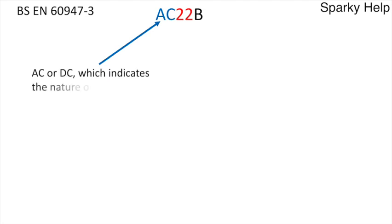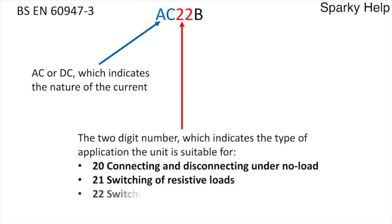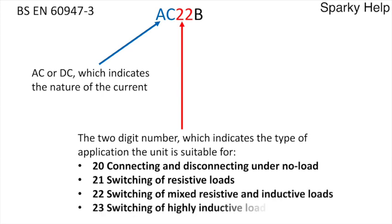Now we've had these numbers on the front — AC22B as an example. What do they all mean? The first part — AC or DC — means it's an AC or DC type switch. If it's DC, the manufacturers will make the contacts to a slightly different standard because of the nature of the current. The second number can be 20, 21, 22, or 23. In this case it says 22, so it's switching of mixed resistive and inductive loads.